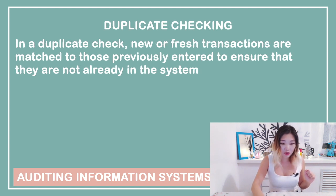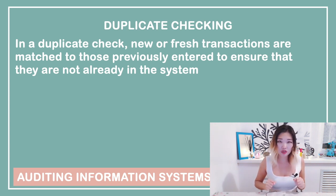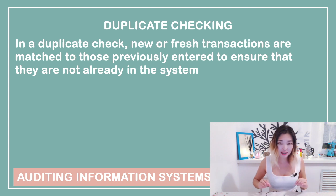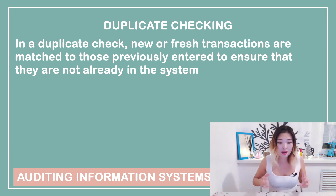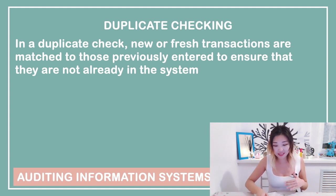Duplicate checking is a type of control that ensures that the data entered are not already in the system, to avoid duplications. This one is quite straightforward.